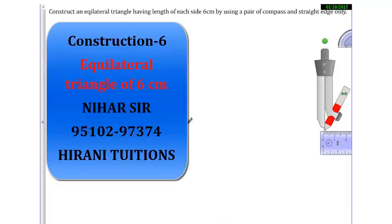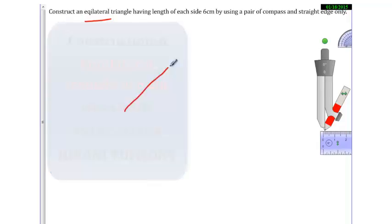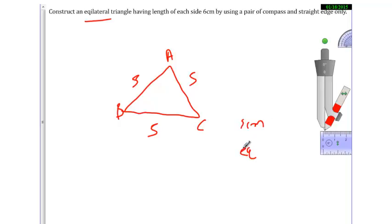Hello friends, we are in the next video of construction. In this, we'll construct an equilateral triangle. What is an equilateral triangle? An equilateral triangle is a triangle in which all sides are the same. Suppose I draw something like this, and this is 5 centimeters, this is 5, this is 5. So if AB, BC, and AC all three sides are of 5 centimeters, then it's an equilateral triangle.